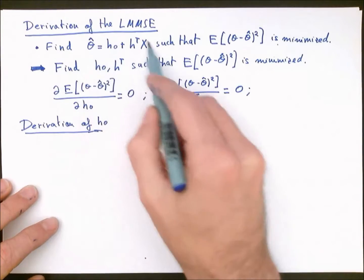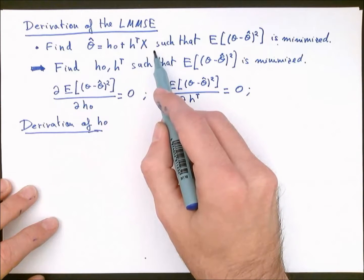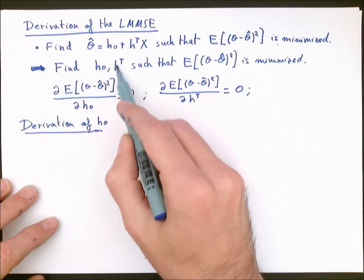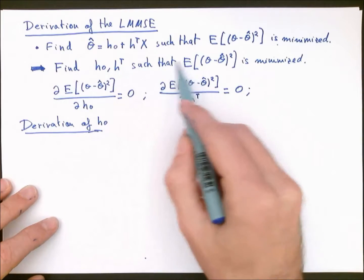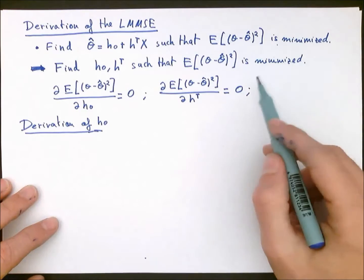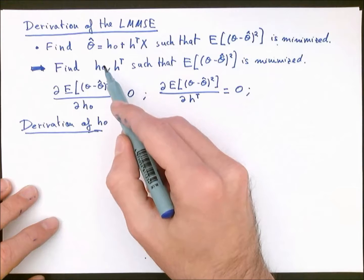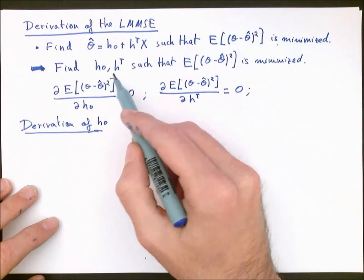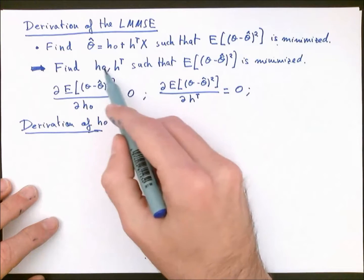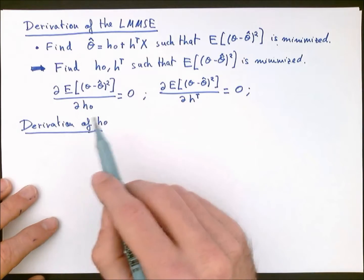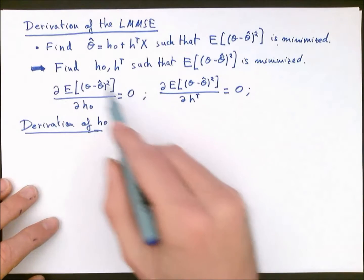Because of this constraint, the optimization problem boils down to finding the coefficients H0 and H transpose that minimize the mean squared error. Since we have a finite number of coefficients, n plus 1, we can simply set partial derivatives of the mean squared error with respect to each of the coefficients to zero and solve the resulting system of equations.